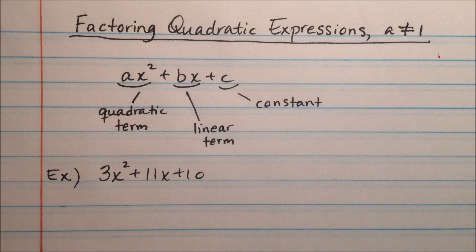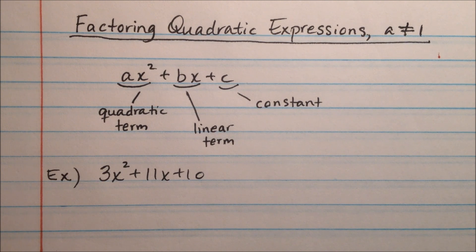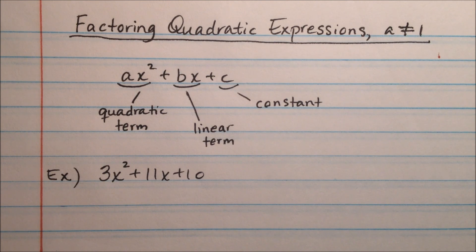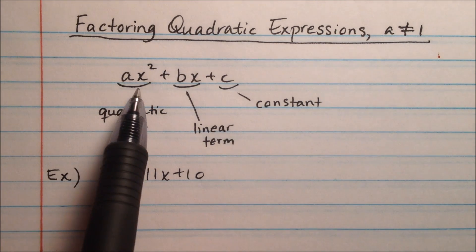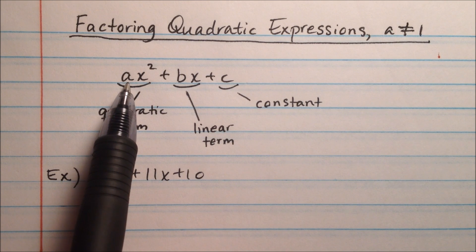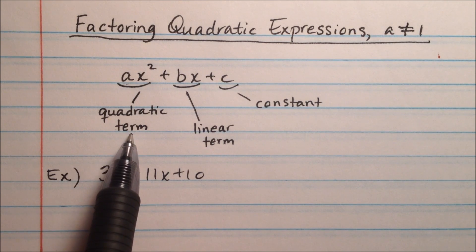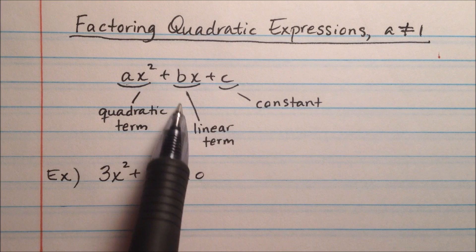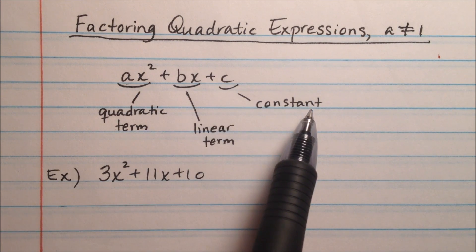In this video, we're going to discuss factoring quadratic expressions, particularly those whose lead coefficients, or a-values, are not going to be 1. So if you caught the last video, we did the quadratic expressions where the a-value is 1. We were talking about this leading coefficient — this a-value was 1 — and we had this quadratic term, then our linear term, and our constant.